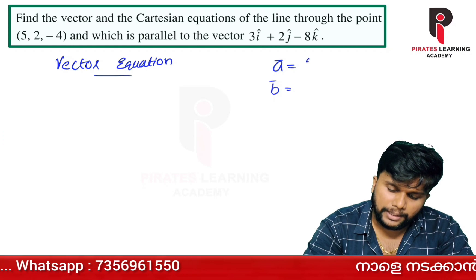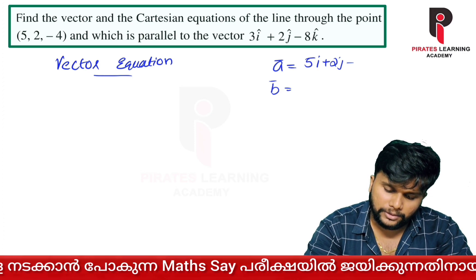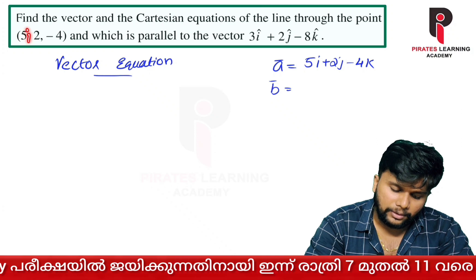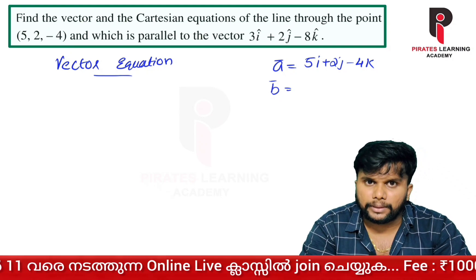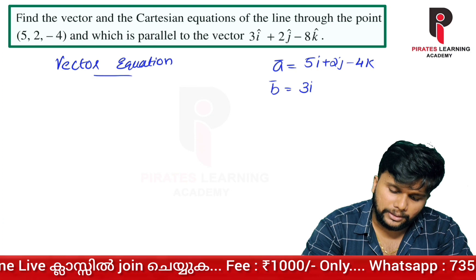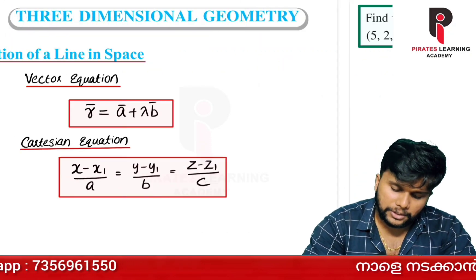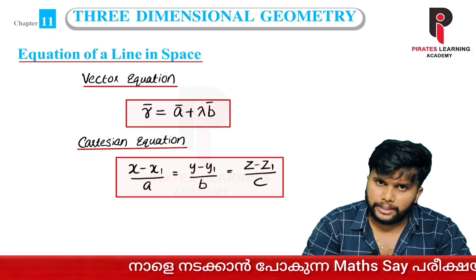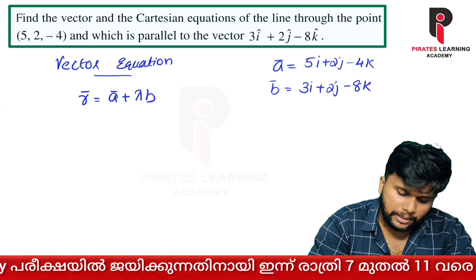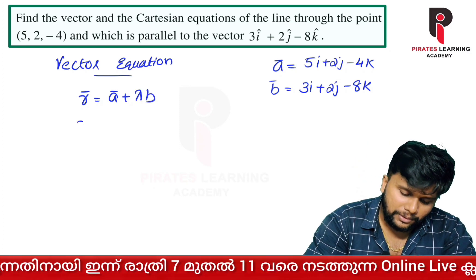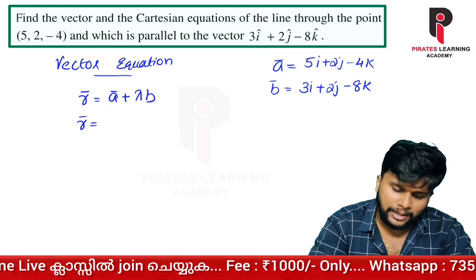In this example, the point gives us A vector as i plus 2j plus 3k, and the direction vector B is 3i plus 2j minus 8k. So the vector equation is R equal to A plus lambda B, which gives R equals i plus 2j plus 3k plus lambda times 3i plus 2j minus 8k.